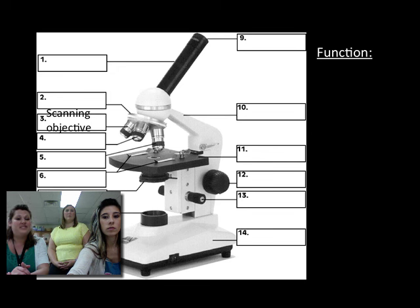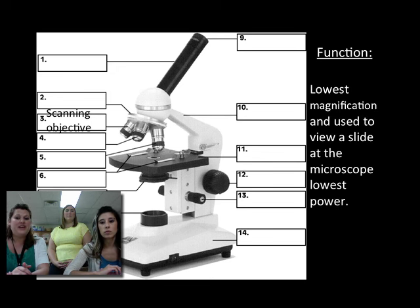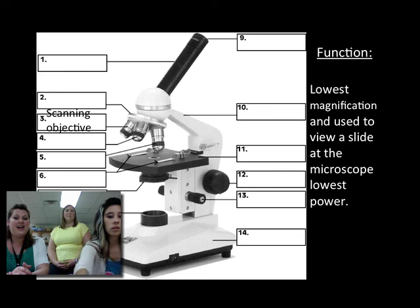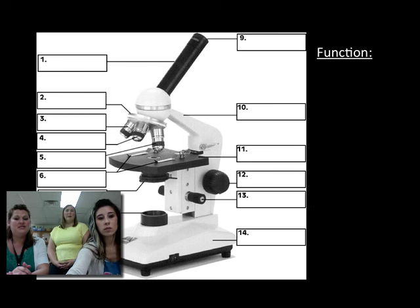Next we have the scanning objective. It's the lowest magnification and used to view a slide at the microscope's lowest power. This is the objective you should always start with.